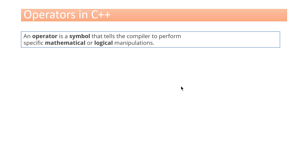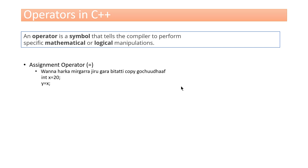So, the assignment of the variable is the assignment operator. The goal is to be the value of the data, the location of the memory, and the copy of the data is the equal-to symbol.